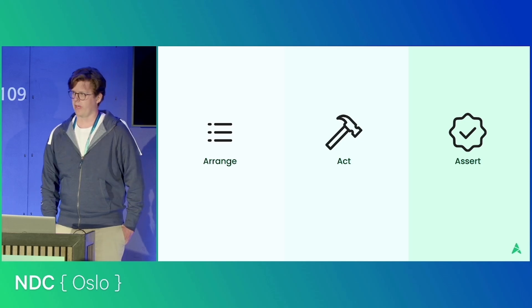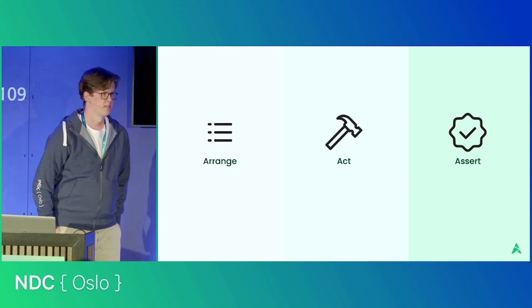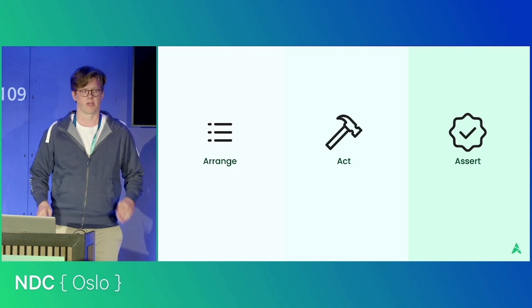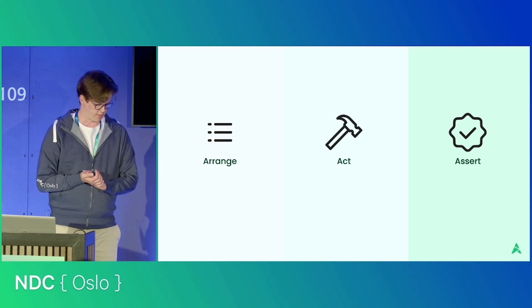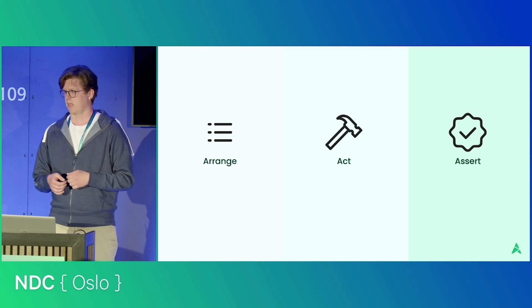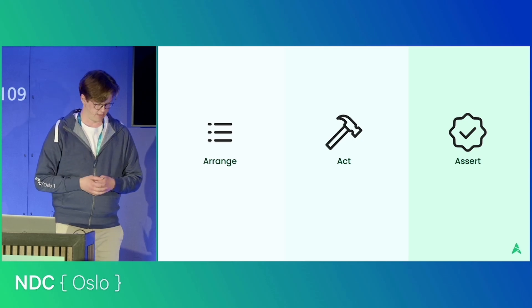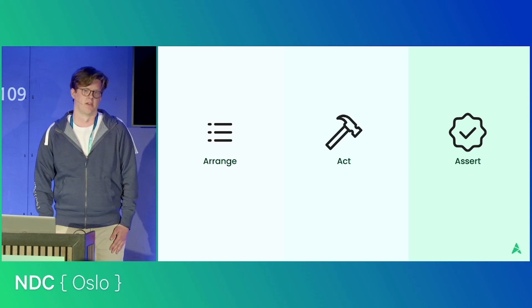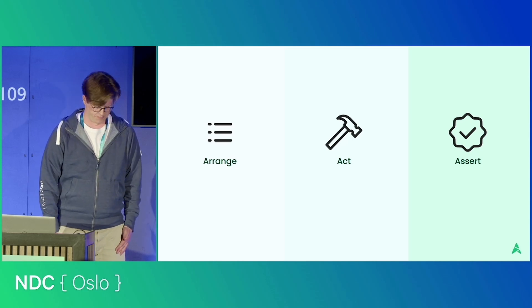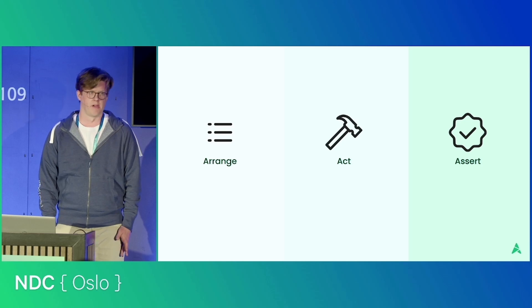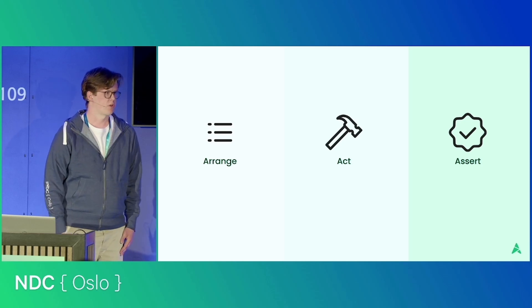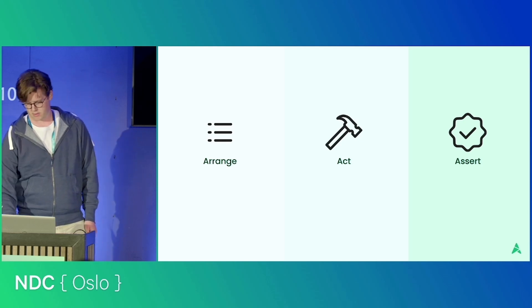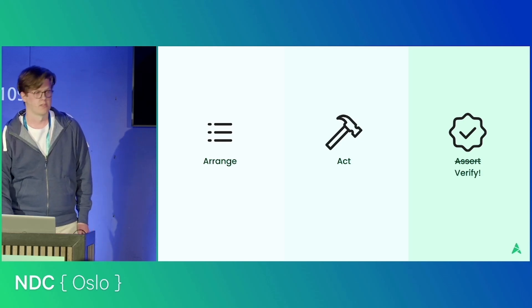A common way to structure tests is Arrange, Act, Assert — you set everything up, run some code, and then check if what you got back was what you expected. But for more complex data structures, this last assertion step can be a bit cumbersome. That's why we replace it with Verify.